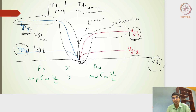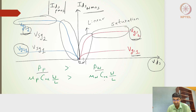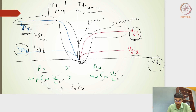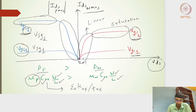Beta_p for PMOS is mu_p times C_oxide times W/L, and beta_n for NMOS is mu_n times C_oxide times W/L. If W/L, oxide thickness t_oxide, and C_oxide — where C_oxide equals epsilon_naught times the dielectric constant divided by t_oxide — are all the same, then the difference between beta_p and beta_n comes entirely from the difference between mu_p and mu_n.